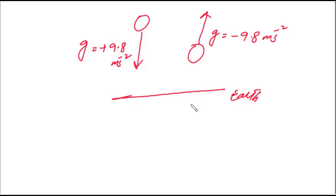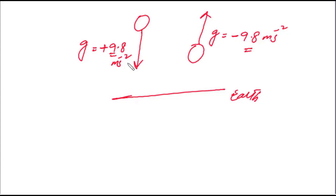Earth کے قریب g کی value constant رہتی ہے یعنی 9.8 m/s²۔ اگر object earth کی direction میں آ رہا ہو تو sign positive ہوگا اور اگر opposite direction میں جا رہا ہو تو sign negative ہوگا۔ یاد رکھیں یہ sign صرف direction کو show کرتا ہے، magnitude کے ساتھ کوئی تعلق نہیں — اوپر جاتے یا نیچے آتے، magnitude 9.8 m/s² ہی رہے گا۔